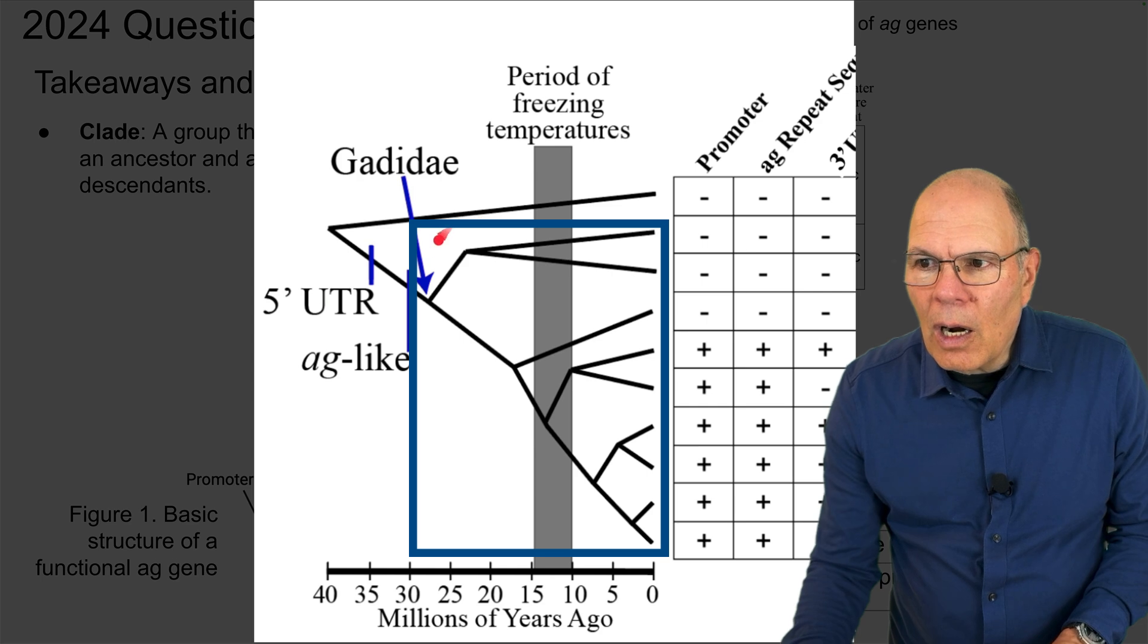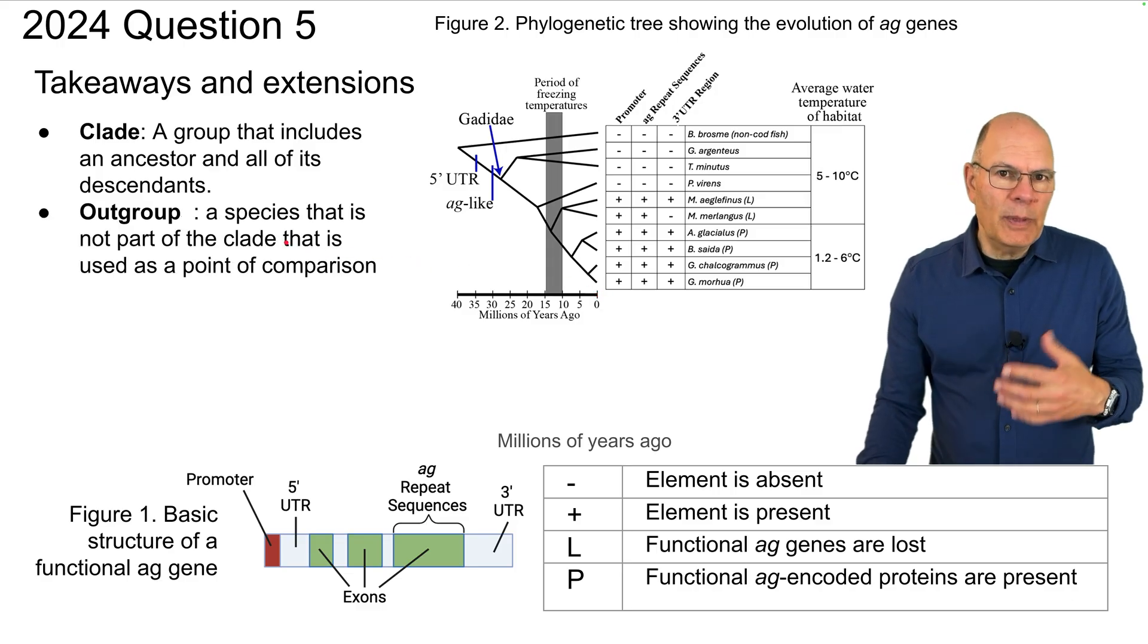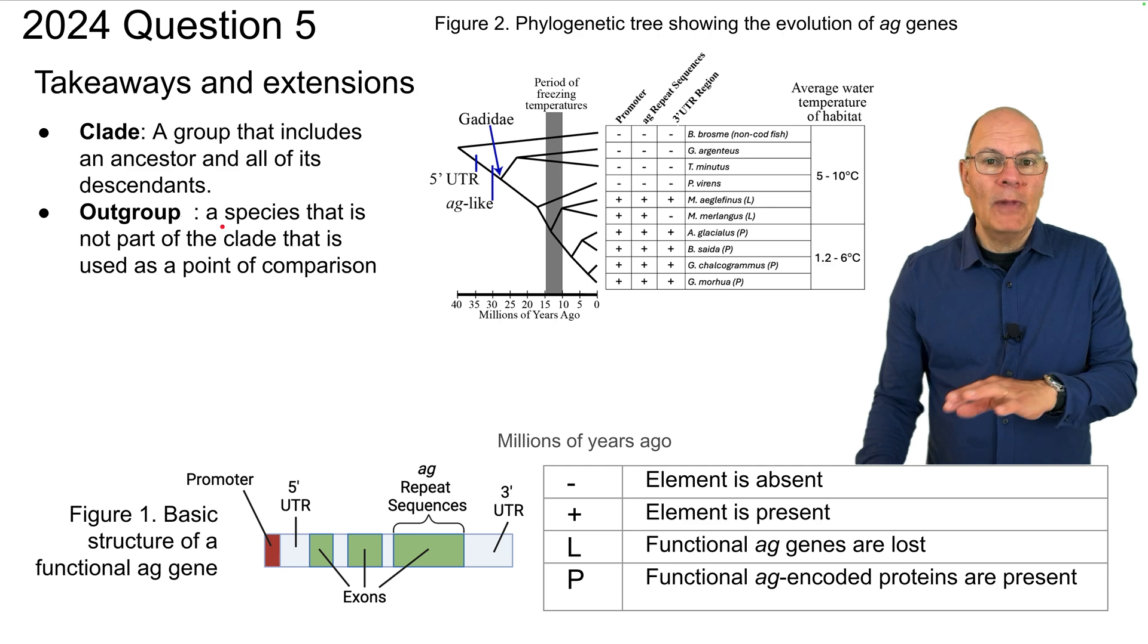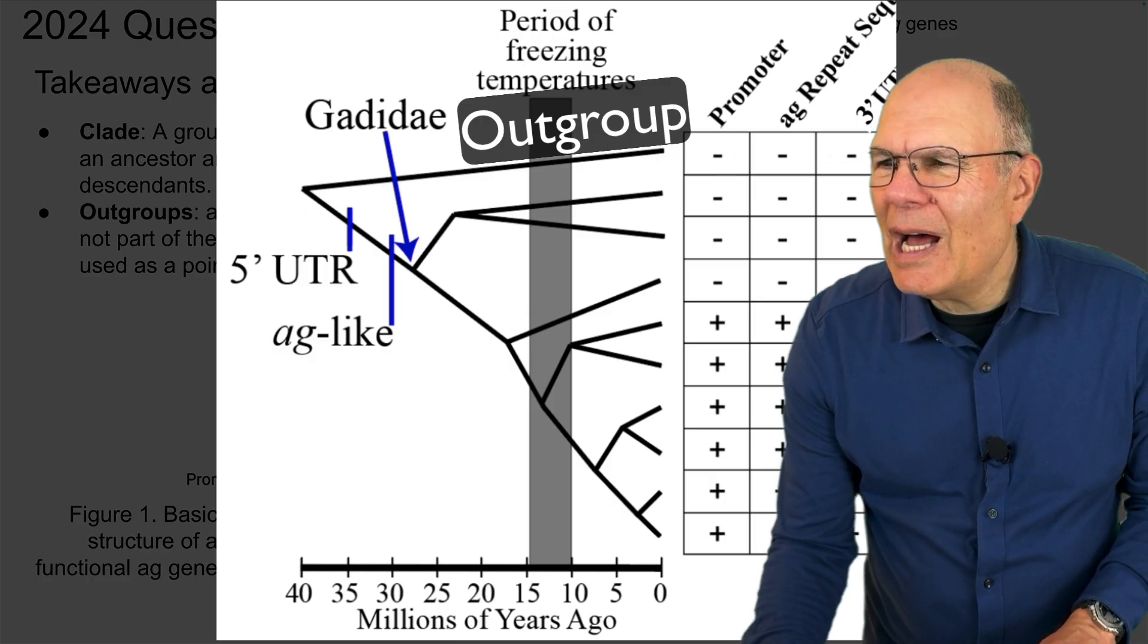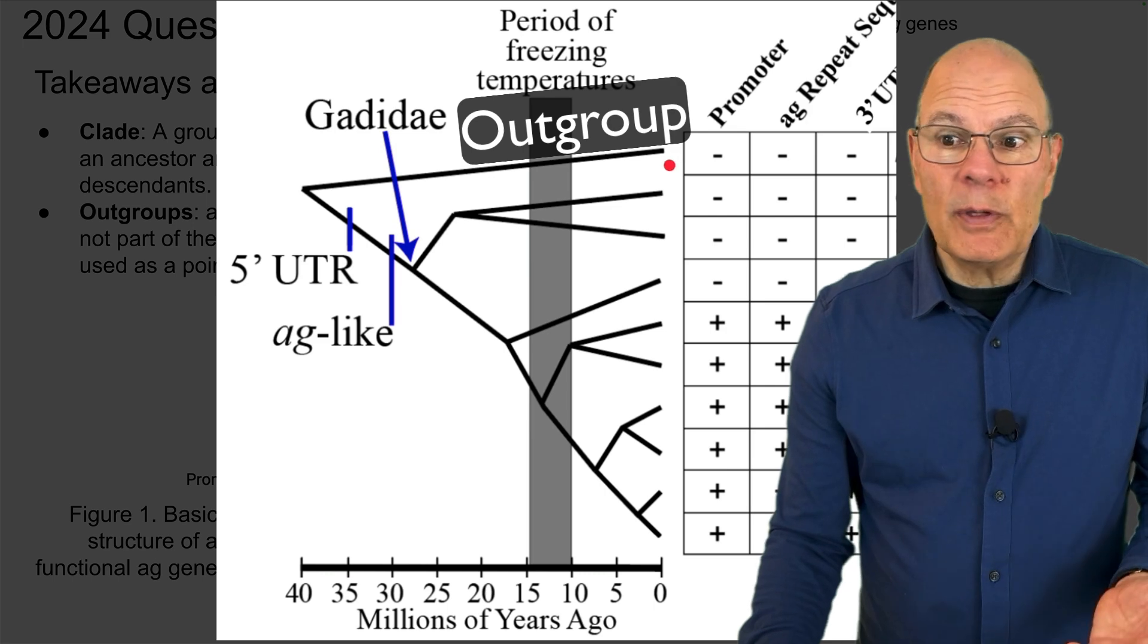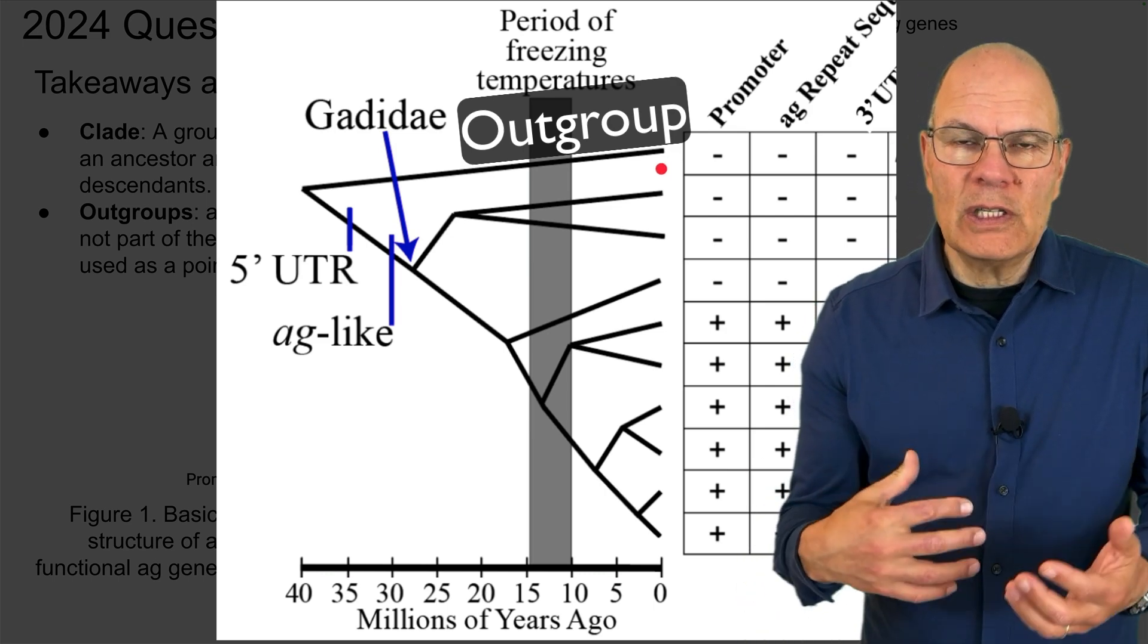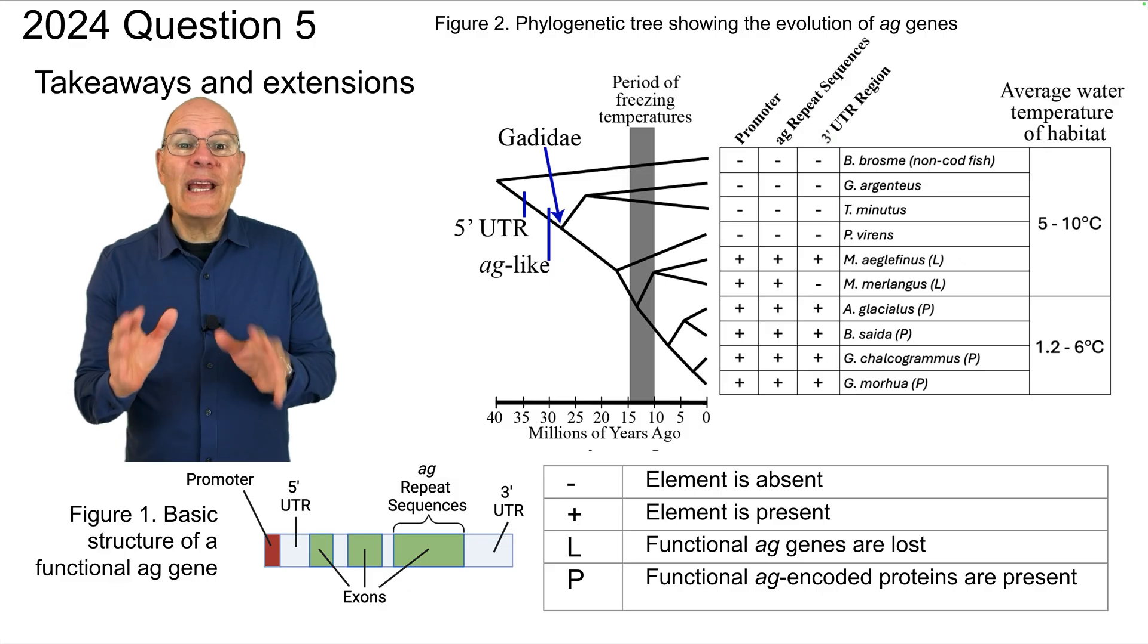All of the cod are a clade over here. Another important concept is an outgroup. Again, it was referred to in this question though it wasn't explicitly named. An outgroup is a species that is not part of the clade that is used as a point of comparison. And you might remember that there was this one non-cod fish B. brosmi that appears in this chart over here. What's the purpose of an outgroup? It's to organize the rest of the organisms in the phylogenetic tree by serving as a reference point, a point of comparison.